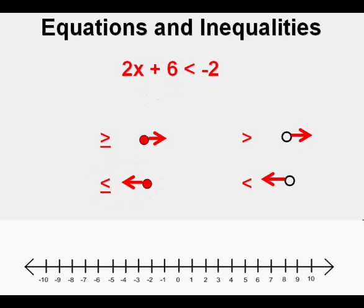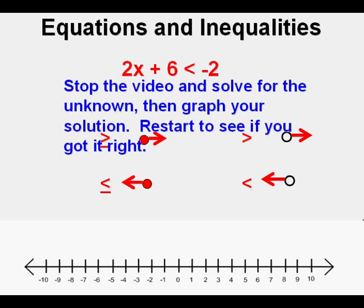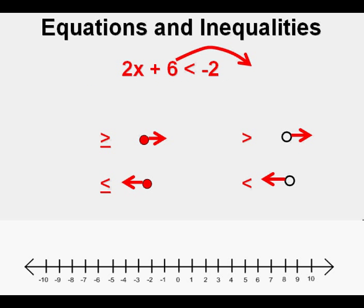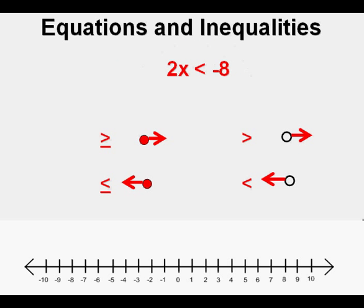Here's another one: 2x plus 6 is less than negative 2. Stop the video — see if you can solve for the unknown and graph it on a number line, then restart to see if you got it right. For the first step, we take the positive 6 to the other side; it becomes minus 6 on the right. Combining like terms, the right side is negative 8. We divide both sides by 2 and get x is less than negative 4. The less than symbol means an open circle with a left-pointing arrow, and here it is graphed.